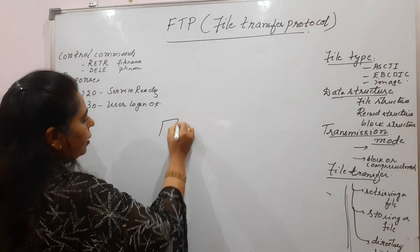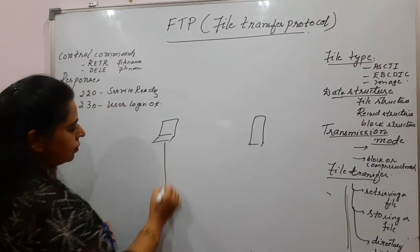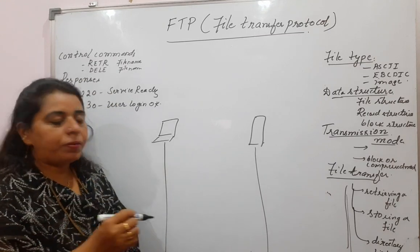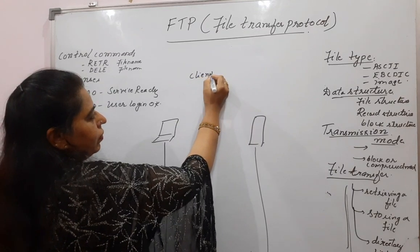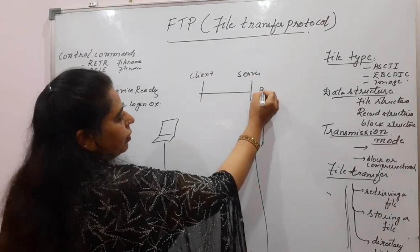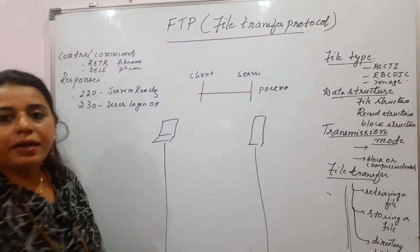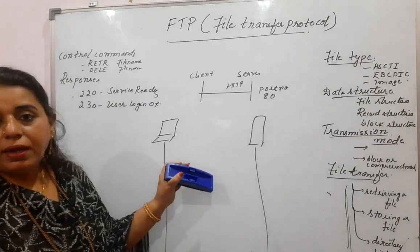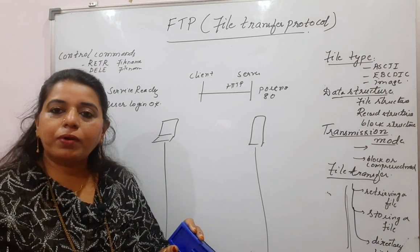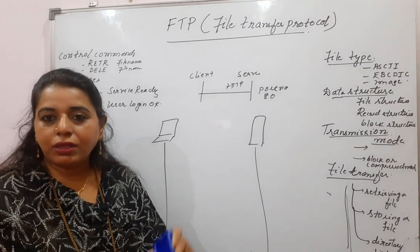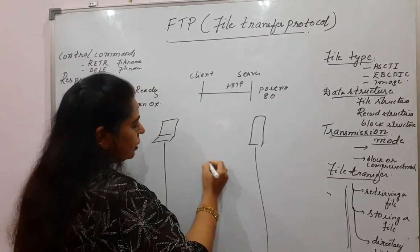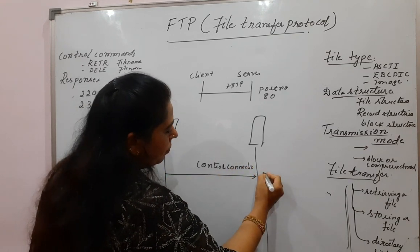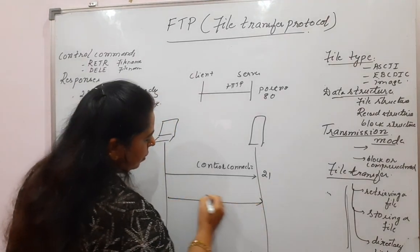To understand the functionality of FTP, let me give you an illustration. This is the client and this is the server. Normally, in the previous HTTP protocol, there is one connection established from the client to the server using one port number only — port number 80. But in FTP, there are two port numbers. FTP provides a separate port number for control commands and a separate port number for data. For the control connection, there is port number 21, and for the data connection, there is port number 20.